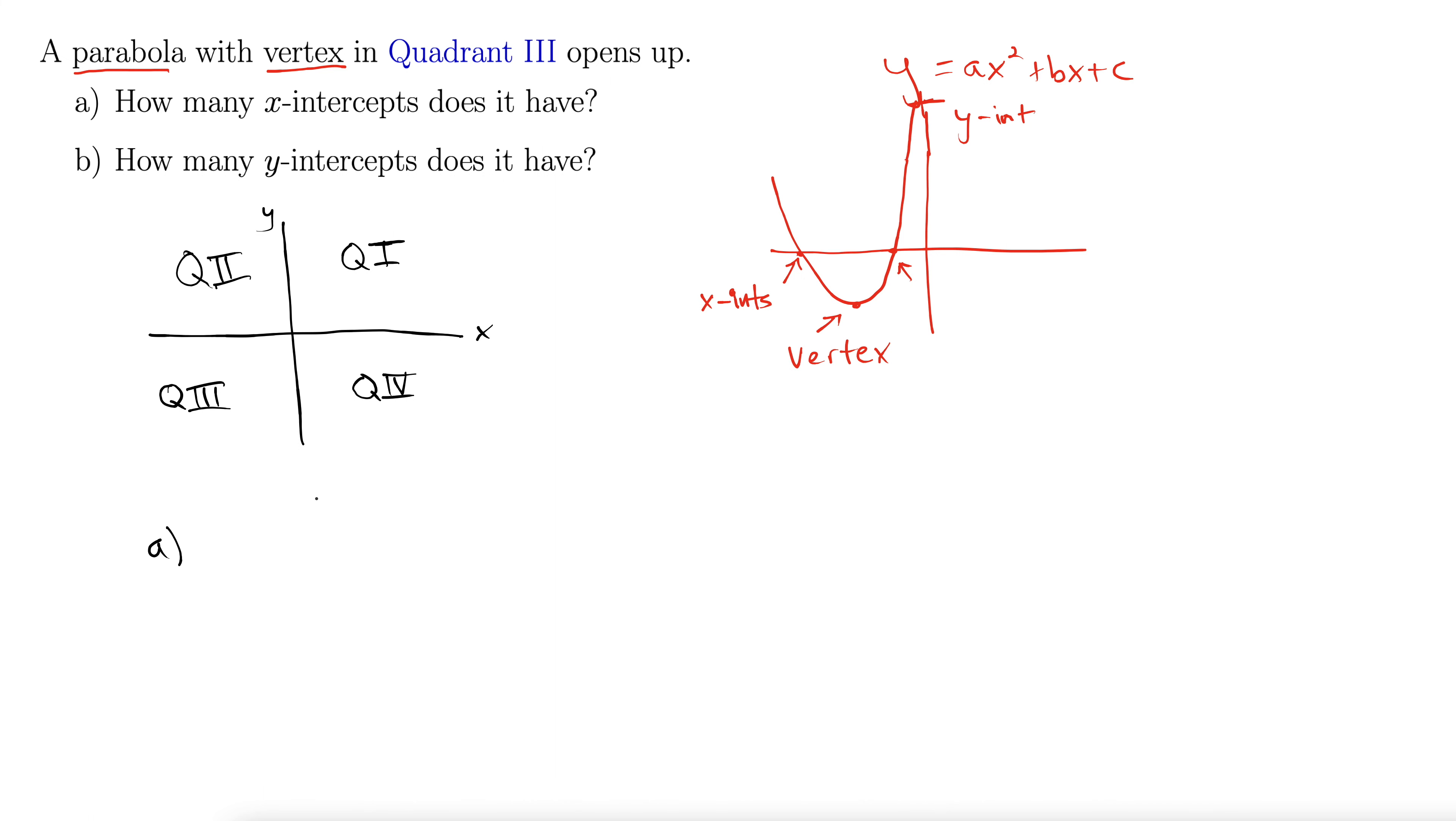So for part A, we have a parabola with a vertex in quadrant three that opens up. So let's just draw an arbitrary one. You might not even have to draw it. You can kind of reason through this, but let's just draw one.